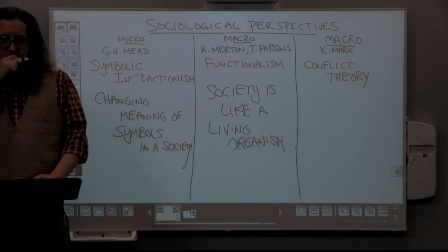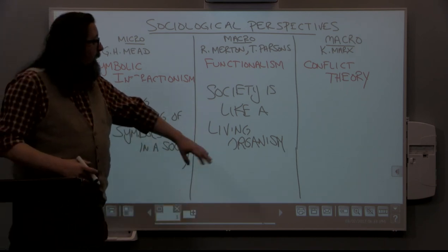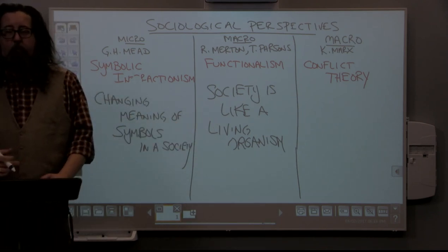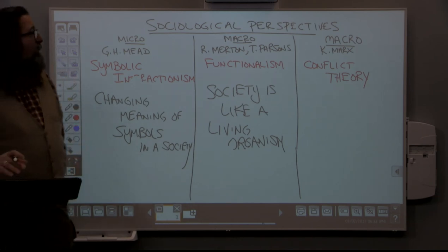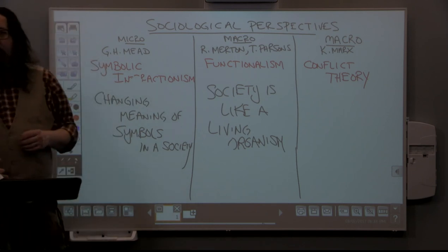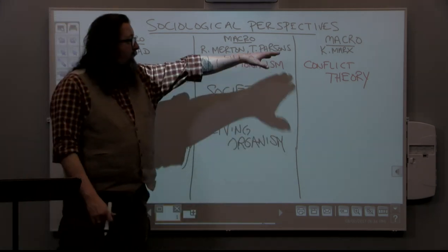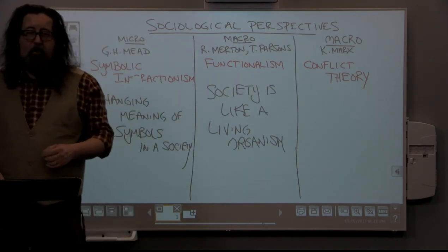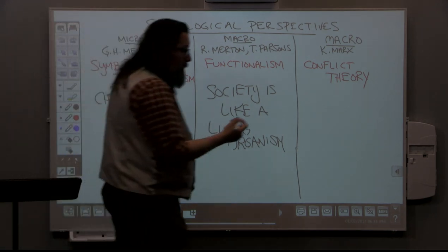Many functions once performed by the American family are now being picked up by other parts of society. The family has changed in its structure and function, and from a functionalist perspective, this change explains the rise in divorce rates. The third and final perspective is also a macro theory — looking at the larger elements of society — and that is conflict theory, introduced by Karl Marx.